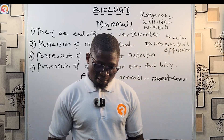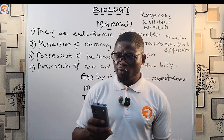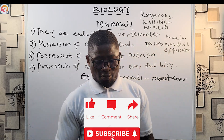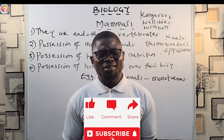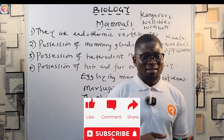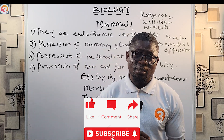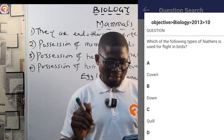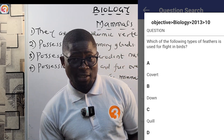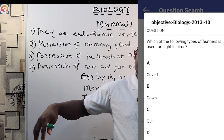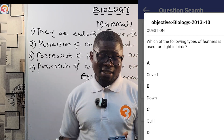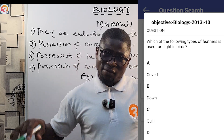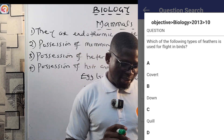Let's take some past questions. A 2013 JAMB question number 10 asks: which of the following types of feathers is used for flight in birds? Options are: A — covert, B — down, C — quill, D — filoplume. The correct answer is C — quill. The feathers found on the wings used for flight are called quill feathers.